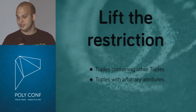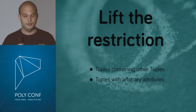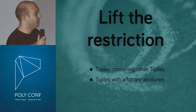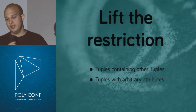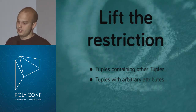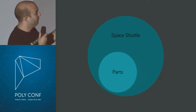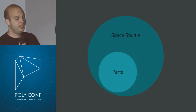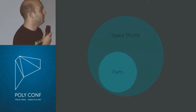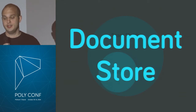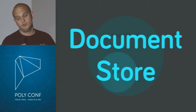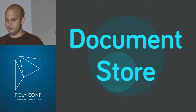But SQL is kind of resistant to denormalization. What if we lift some restrictions of SQL databases? What if we allow tuples to contain other tuples, and have tuples with arbitrary attributes? If we can do that — like a space shuttle with its parts as value objects, expressed directly in your database — then it is a document store. Some people also refer to that as an aggregate database.